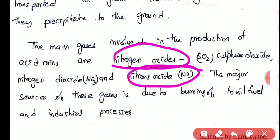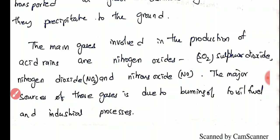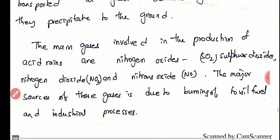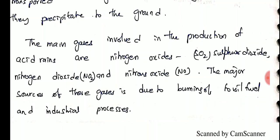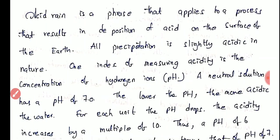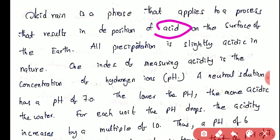The main gases involved in the production of acid rain are nitrogen oxide (NO), nitrogen dioxide (NO2), and sulfur dioxide (SO2). The major sources of these gases are coal burnt in thermal plants, fossil fuels, and industrial processes. Acid rain is a phrase that applies to a process that results in deposition of acid on the surface of the earth — simply, acid rain deposits acid molecules on the earth's surface.